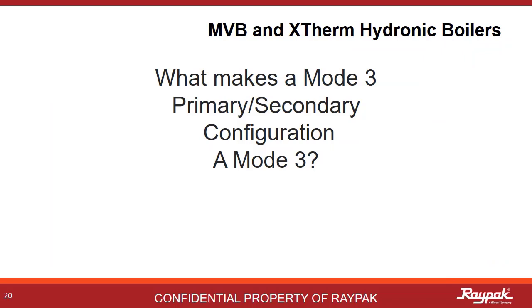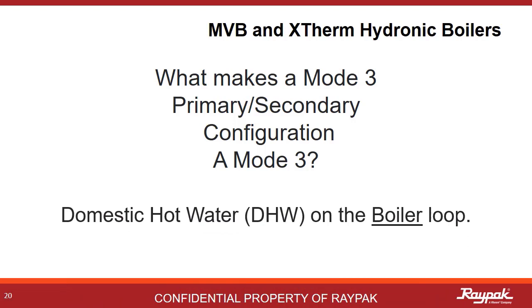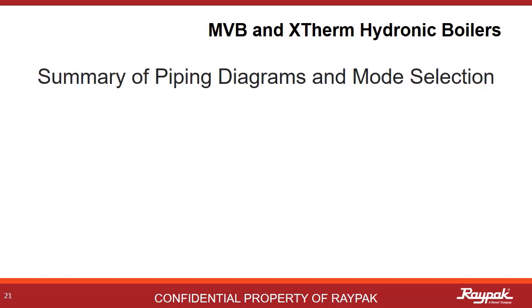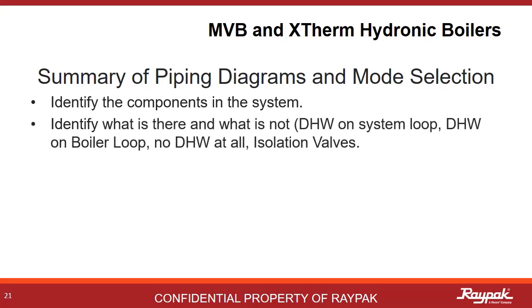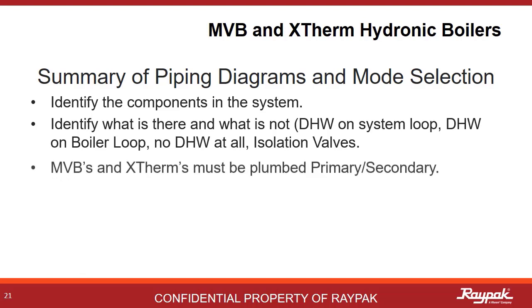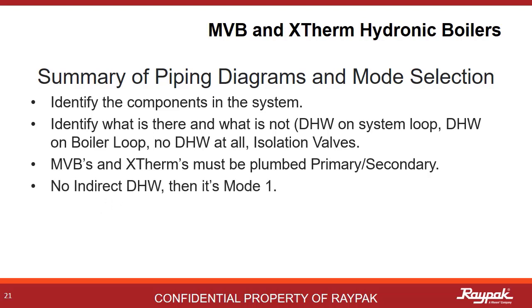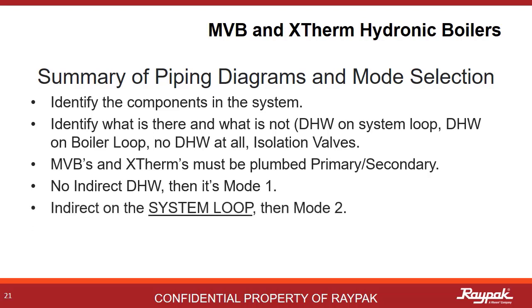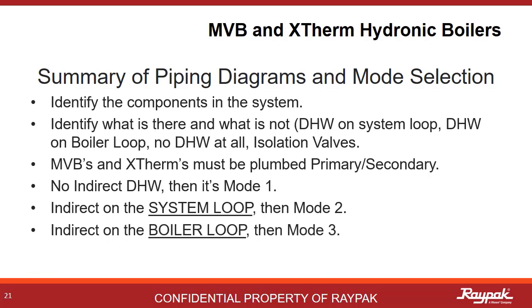So what makes a Mode 3 a Mode 3? It must be plumbed primary-secondary and it must have an indirect domestic hot water system on the boiler loop. Here are some overall pointers on plumbing systems and how they relate to mode selection for type H boilers. Identify all of the parts of the system — look for what is there as well as what is not there. Make sure it is plumbed primary-secondary. In most cases, with no indirect domestic hot water present, Mode 1 will be your choice. If you have an indirect domestic hot water present on the system loop, then it's a Mode 2. If the indirect domestic hot water is present on the boiler loop, then it's a Mode 3.